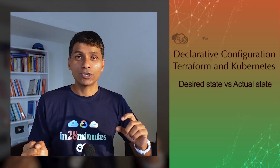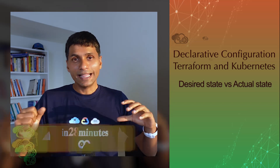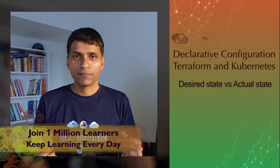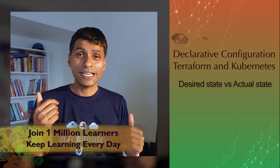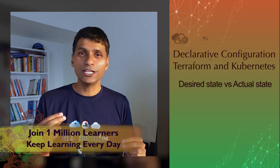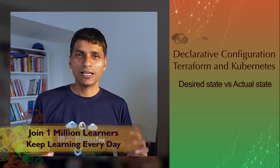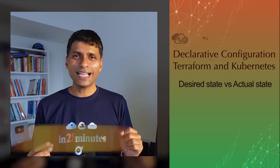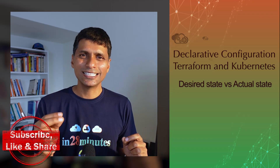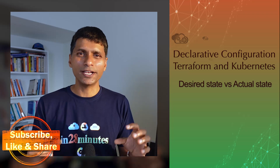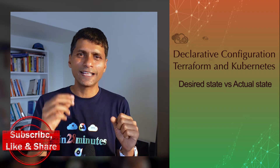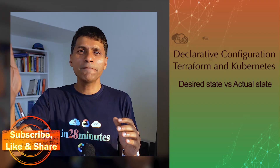There are two styles in which you can express this. You can use an imperative style — in imperative style you give a command. Right now there are five, so you give a command saying 'add 10 instances.' This is imperative: you need to know the current state and then give an imperative command, and it would go to 15 instances.